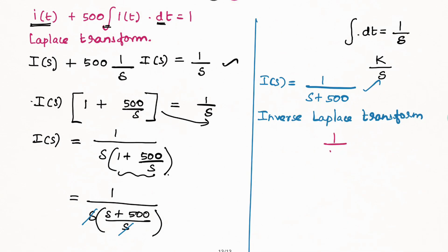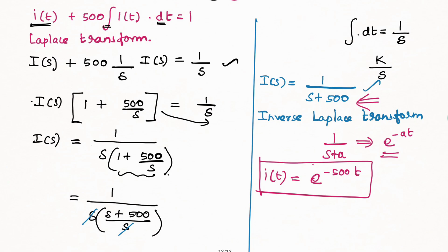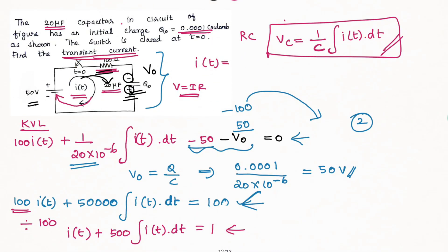Now we apply the inverse Laplace Transform. The formula is: 1 divided by S plus A has inverse Laplace transform equal to e to the power minus A times T. So applying this formula, I of S is 1 divided by S plus 500. The key point with the initial charge problem is the polarity difference. Applying the formula, I of T equals e to the power minus 500T. This is the transient current expression.